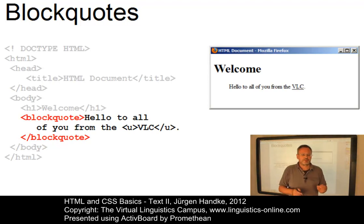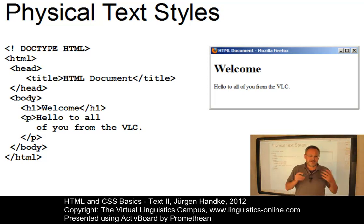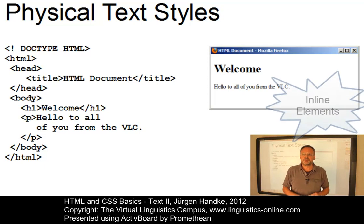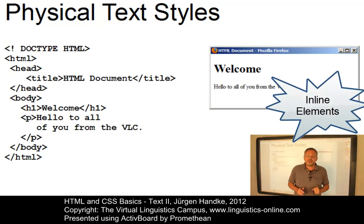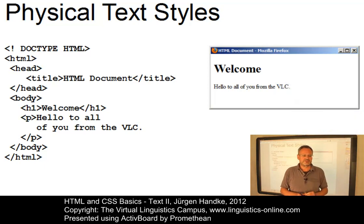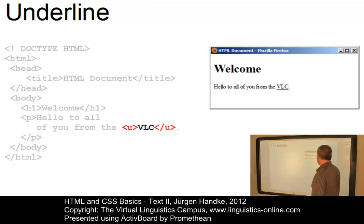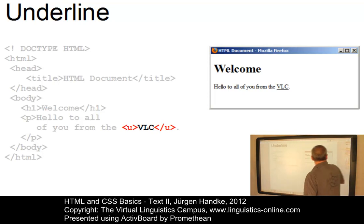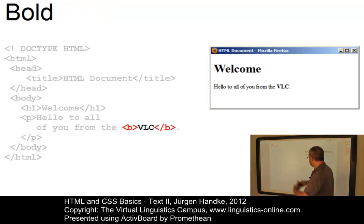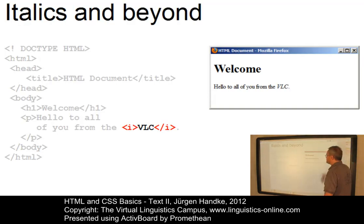Let's now turn our attention to physical text styles. HTML provides a set of physical text styles which are used directly in the flow of text as so-called inline elements, to affect the appearance of the text. Each physical tag gives the browser specific display instructions. We already saw the underline tag — the text enclosed in the underline tag is obviously underlined. Using the tag for bold, the B tag, the enclosed text appears in bold. And the I tag displays the text in italics.